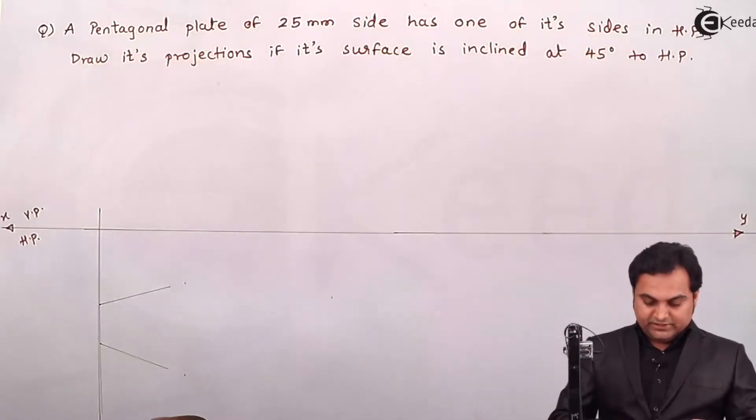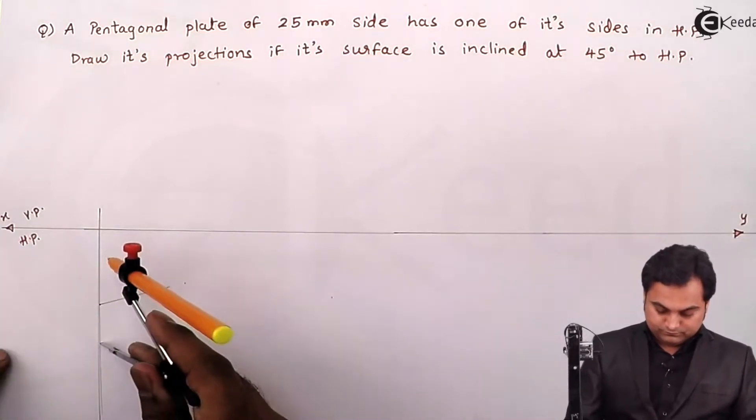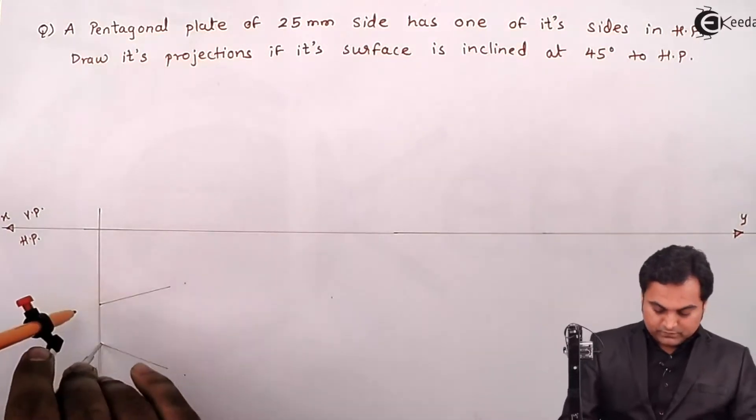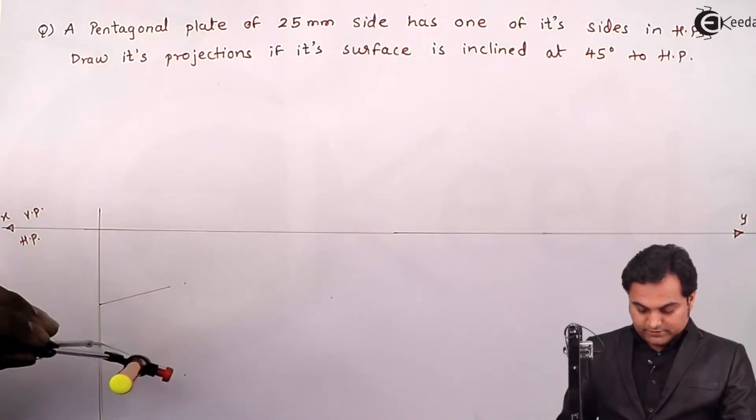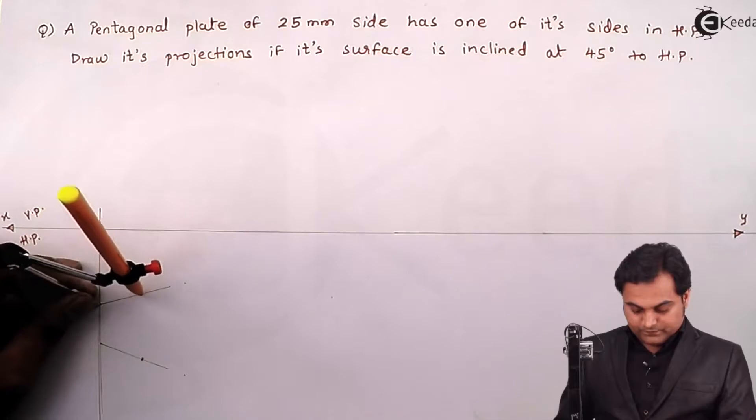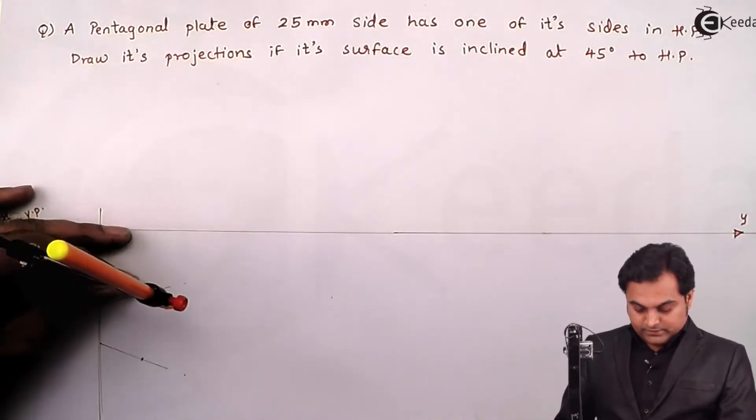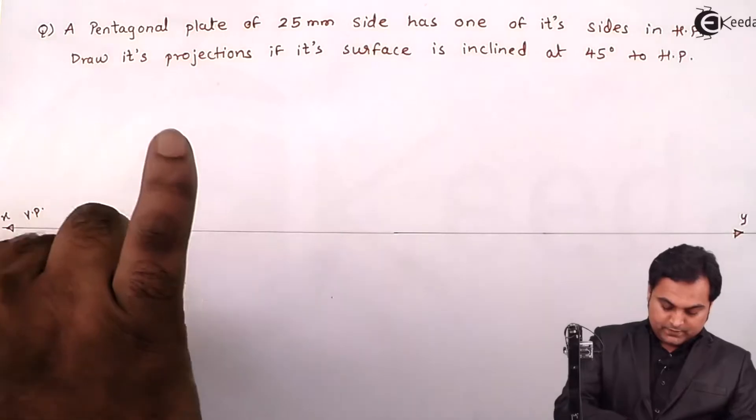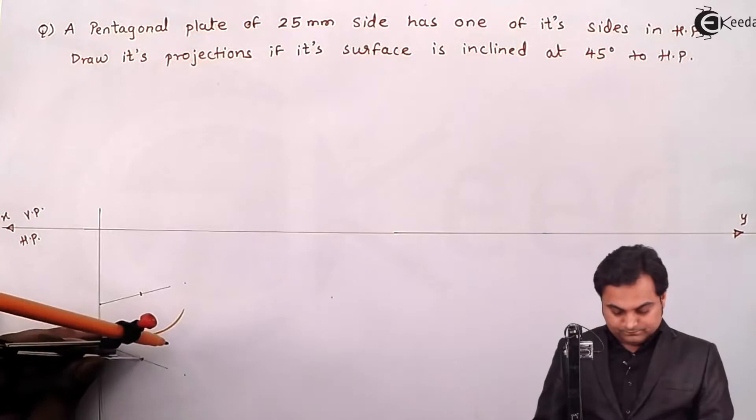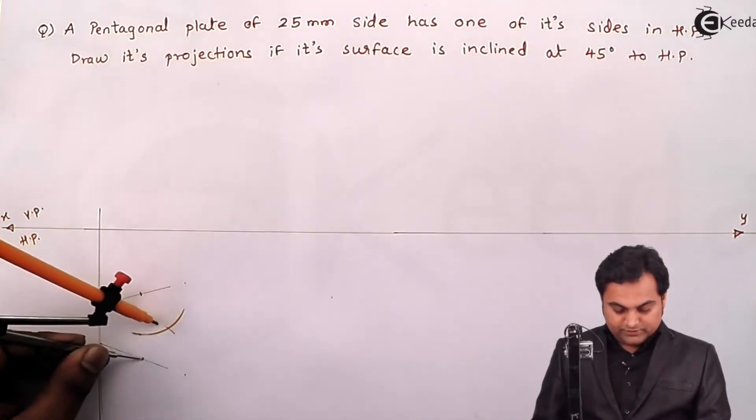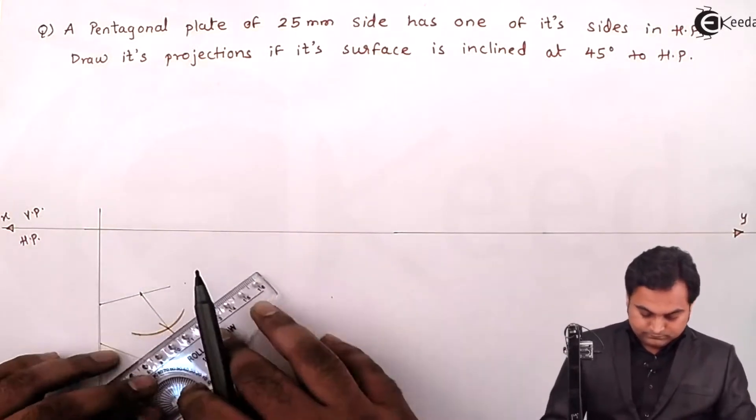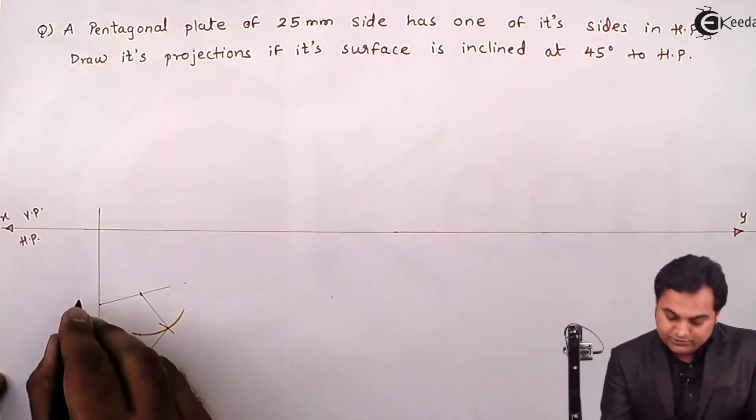Next I'll measure this side 25mm, locking it here. Similarly on to the other side. Next keeping the same distance, drawing a light arc, cutting it from the other side. So giving the rotations here.